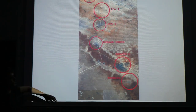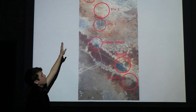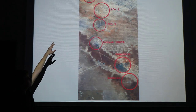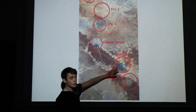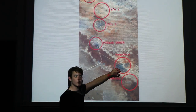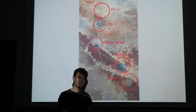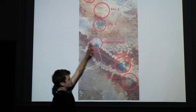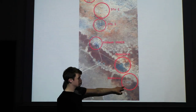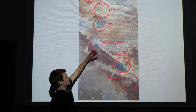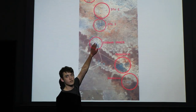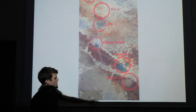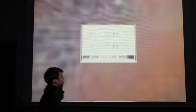This is a global view of the camp. You have different parts: Dagahaley, IFO, and Hagadera, which will be built first, with around 70,000 people there. The two newer ones are IFO2 and Kambioos, established in 2011. We decided to locate our school in Kambioos.